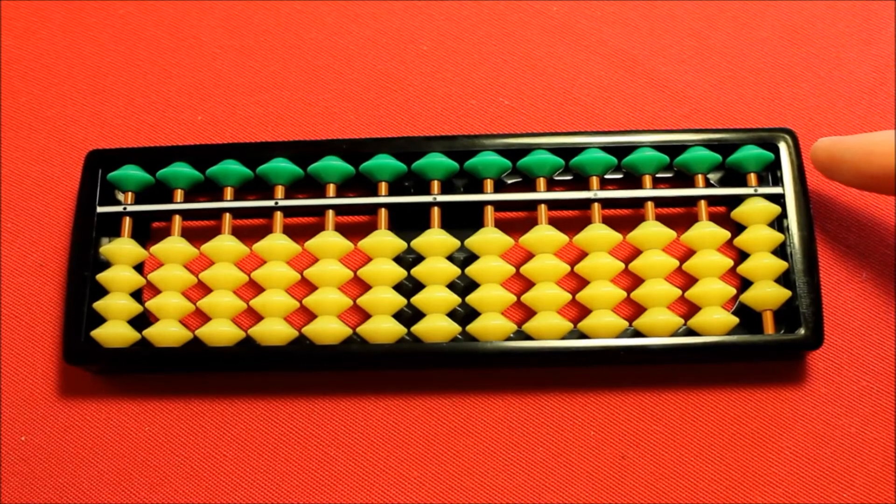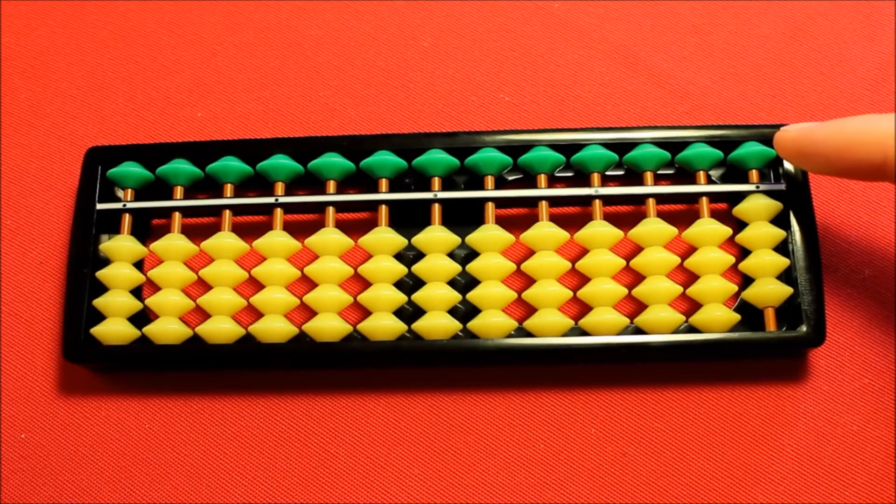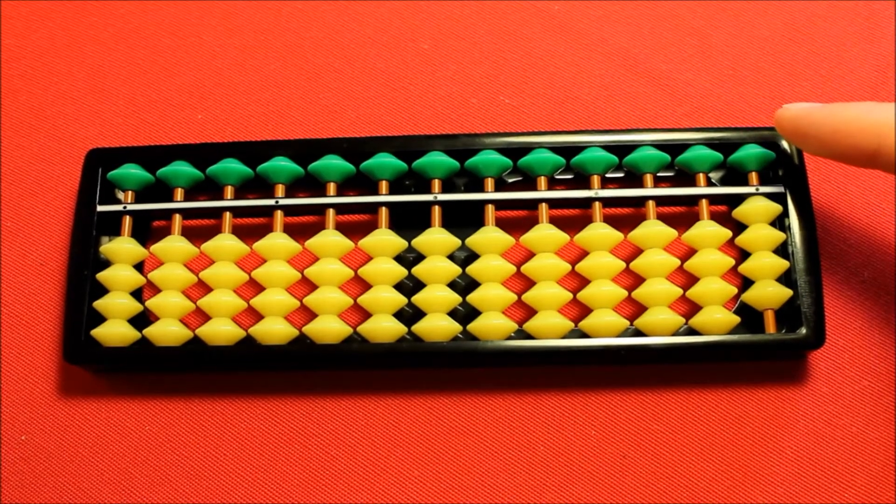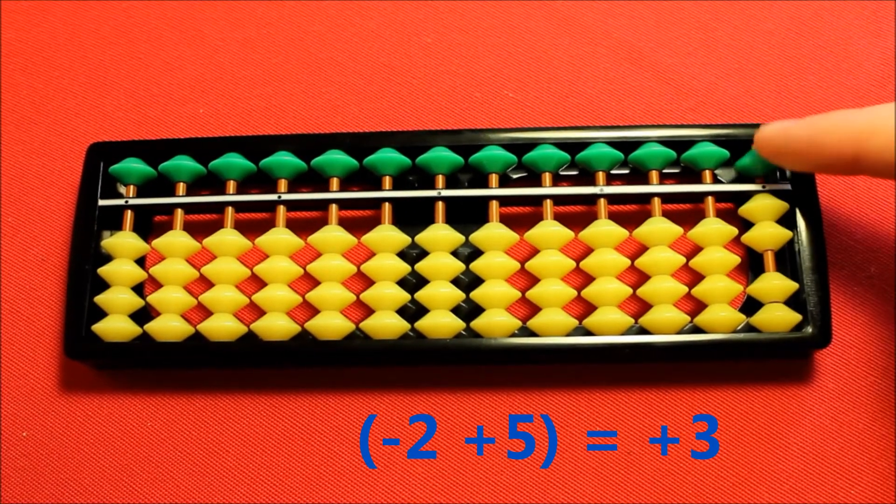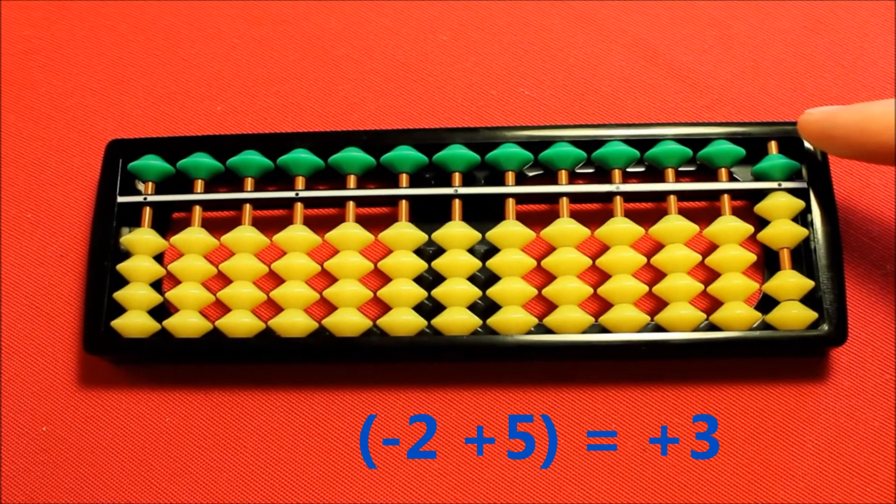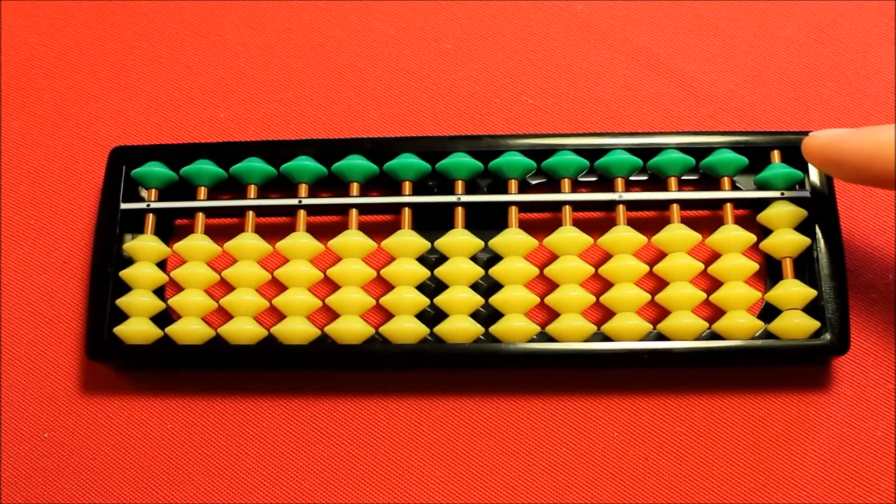But what about if I want to add a further three? Again I'm going to use the heavenly bead. I'll be adding five which is two more than the three I wish to add. So I subtract two then add five for a net result of adding three and four plus three equals seven.